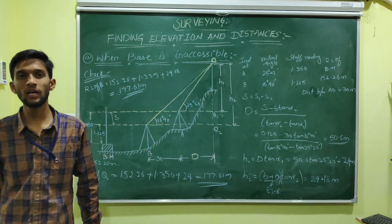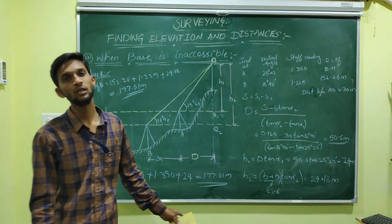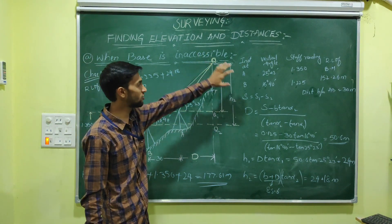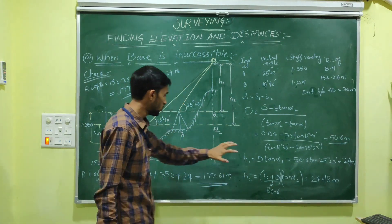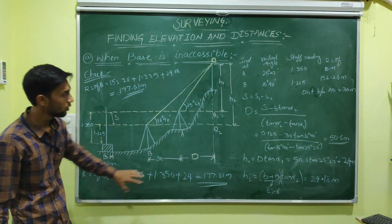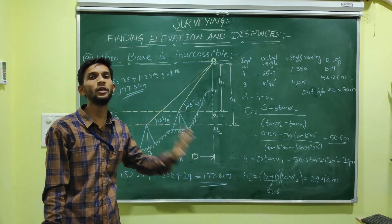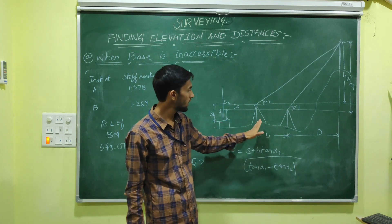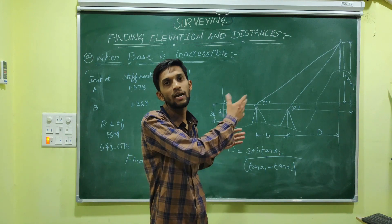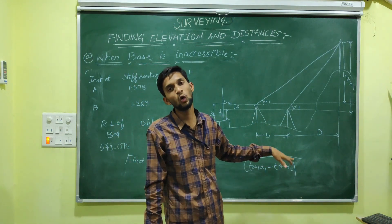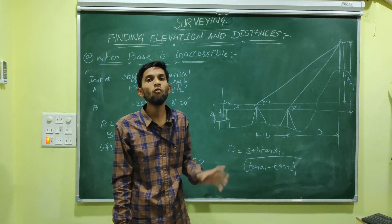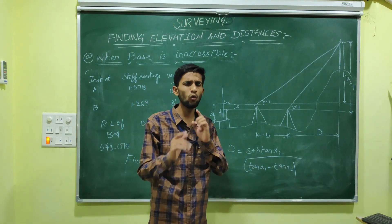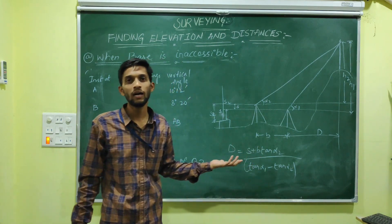If both values of RL of Q are equal, your calculation is correct; otherwise find where the mistake was made. In some cases, station A is lower than station B. In the previous case, A was higher than B. When A is lower, the formula for D changes to: D equals (S plus b·tan(alpha 2)) divided by (tan(alpha 1) minus tan(alpha 2)). There is only a sign difference between the two cases; all other steps remain similar.